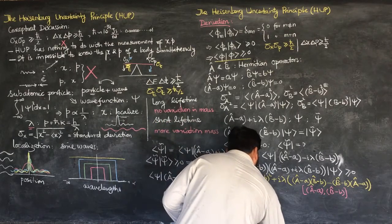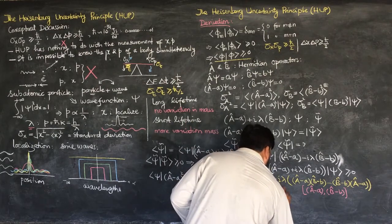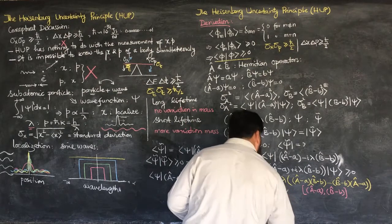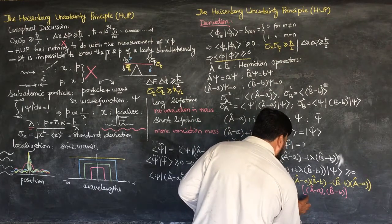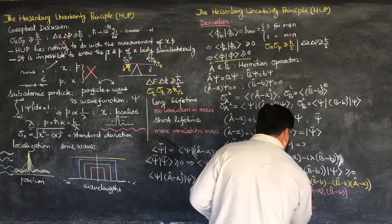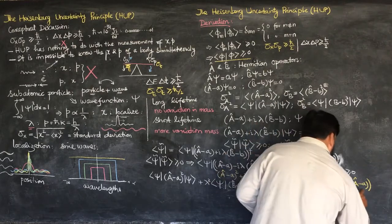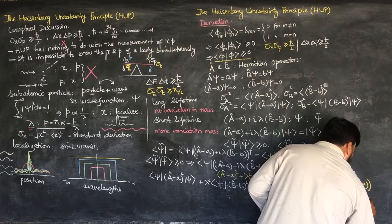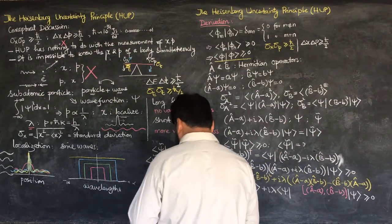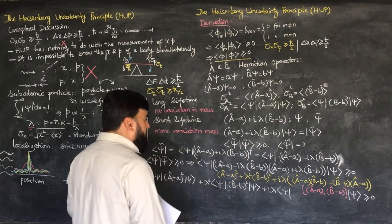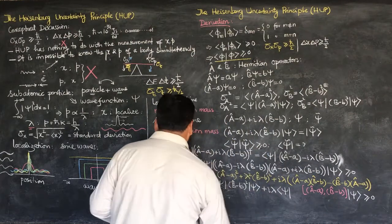We start with the commutation relation involving (A - <A>) and (B - <B>) inside the state |ψ⟩, giving us [A-<A>, B-<B>]|ψ⟩ ≥ 0. Now we will have to work out this commutation relation.